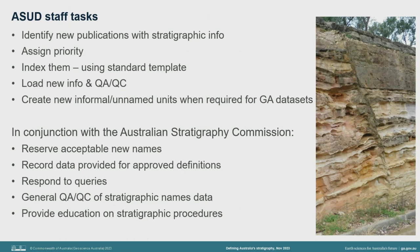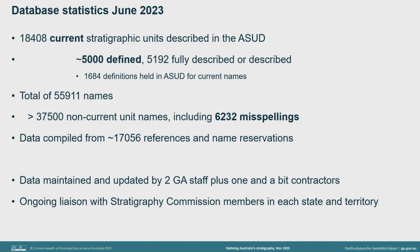There are currently only two permanent strat units staff, plus contractors, to do a range of tasks — identifying new publications, indexing them, getting the data into the database, quality controlling the data including updating stratigraphic unit information, and responding to stratigraphy and database queries. A snapshot of the database in June 2023 showed that it recorded some 18,500 names considered to be current. Of these, only 5,000 have a published definition, and another 5,500 are nearly there — fully described or described. Of the non-current names, which also include historical stratigraphic units, there are also over 6,000 recognised misspellings.